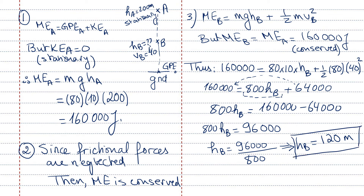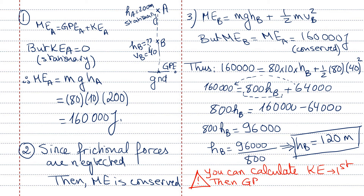A remark: some people may prefer to first calculate KE at B, then find GPE as mechanical energy minus KE, then solve GPE equals mgh for h. That approach is also correct. Both methods yield the same result — choose whichever you find less confusing.